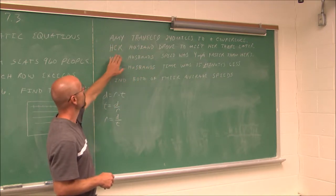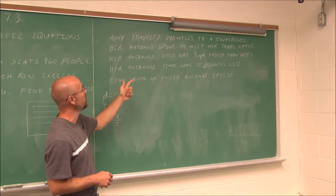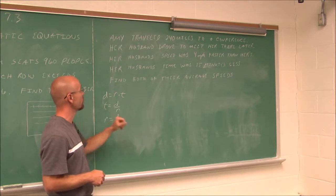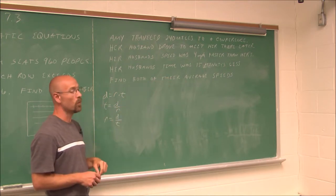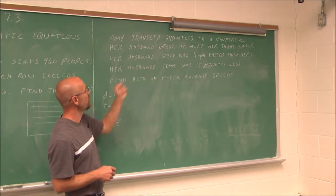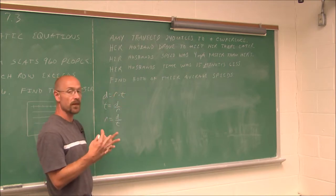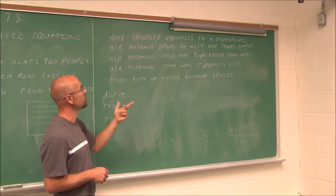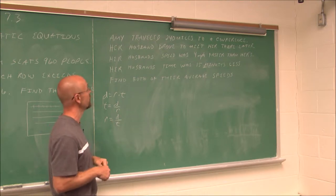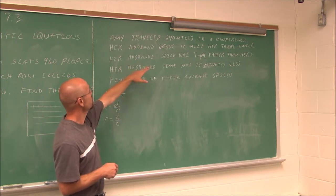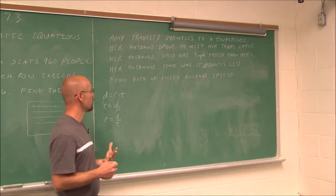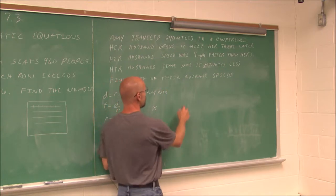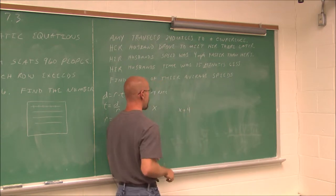Her husband drove to meet her there later. Her husband's speed was 4 miles per hour faster than hers, and his time was 15 minutes less. Find both of their average speeds. I don't know what her speed is, so I'm going to say x is Amy's rate. Her husband's rate is x plus 4 miles per hour. They travel the same distance of 240 miles because they're going to the same location.